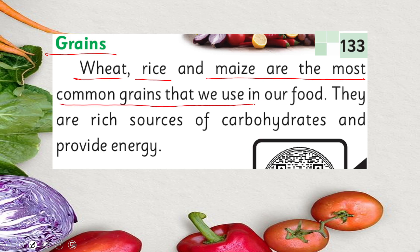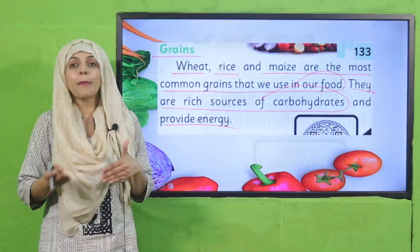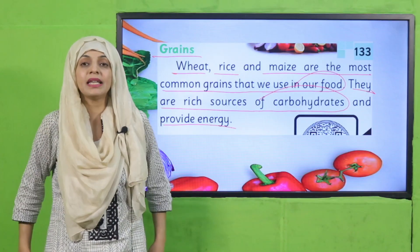Wheat, rice and maize are the most common grains that we use in our food. They are rich sources of carbohydrates and provide energy. Carbohydrates are the main source of energy for your body — they are what keep you active. If you eat chicken or rice, you get that power and energy feeling.